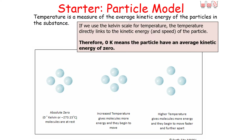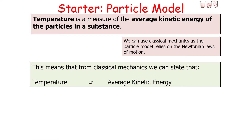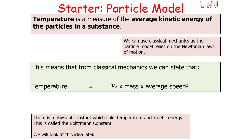As shown in the following animation, at 0 degrees Kelvin — absolute zero — the particles have an average kinetic energy of 0 and are at rest. So temperature is a measure of the average kinetic energy of the particles in a substance. Using classical mechanics, since the particle model relies on Newtonian laws of motion, temperature is directly proportional to the average kinetic energy of the particles, and therefore directly proportional to one-half times mass times average speed squared.